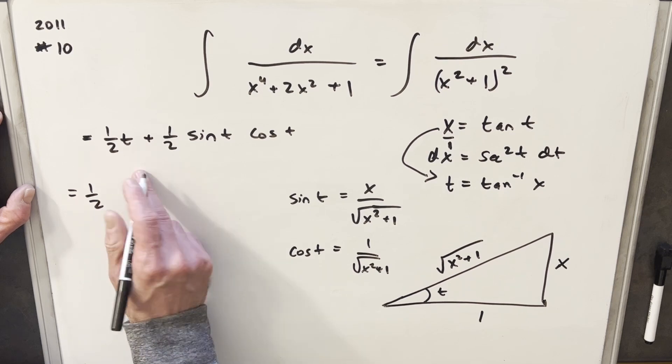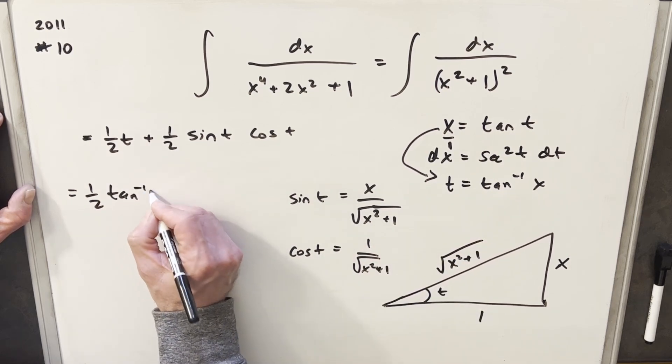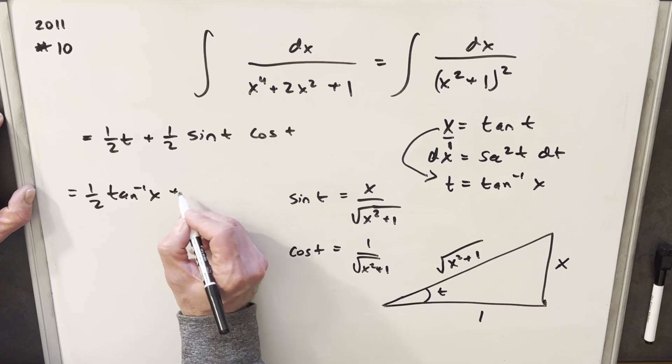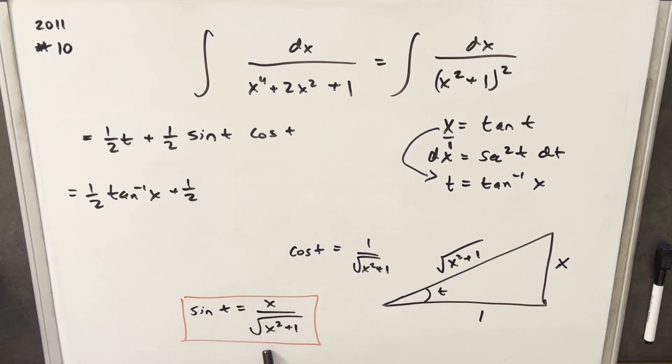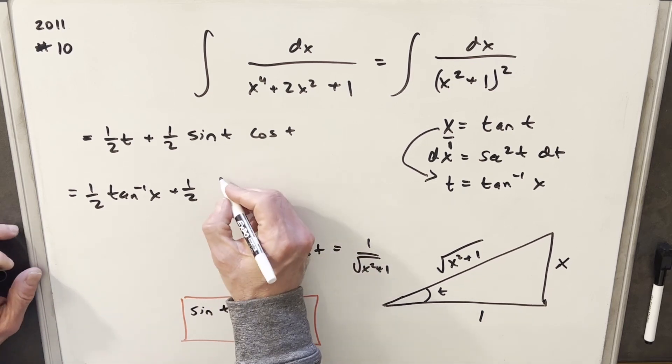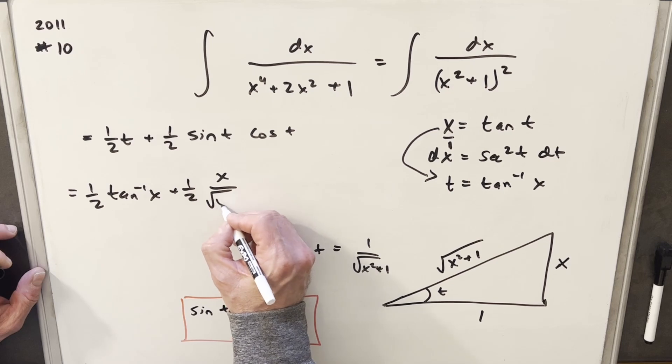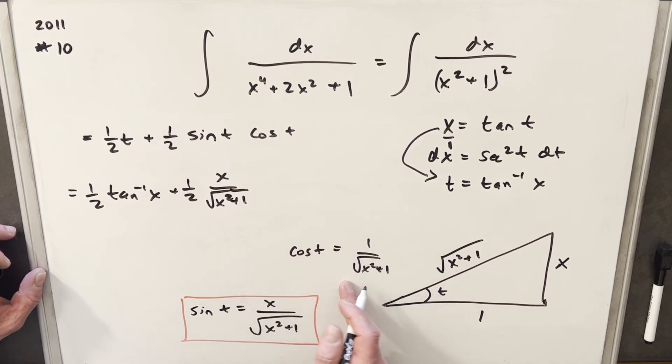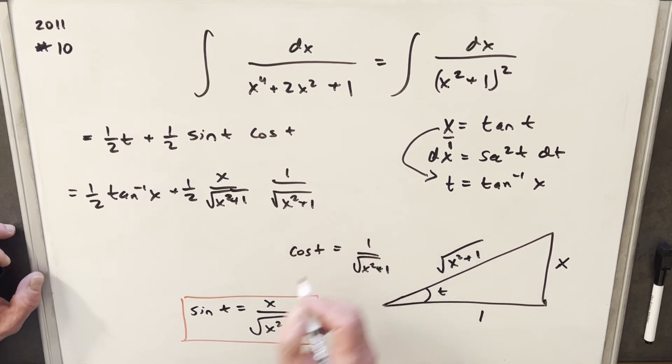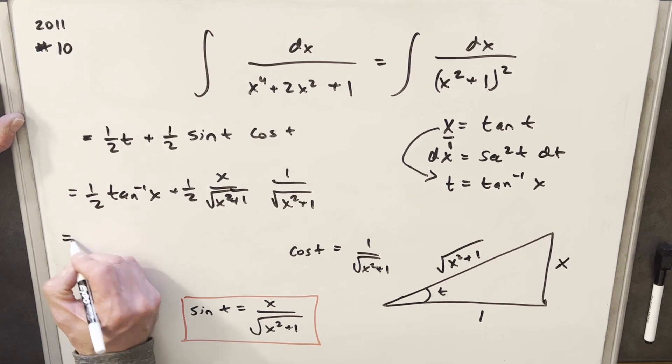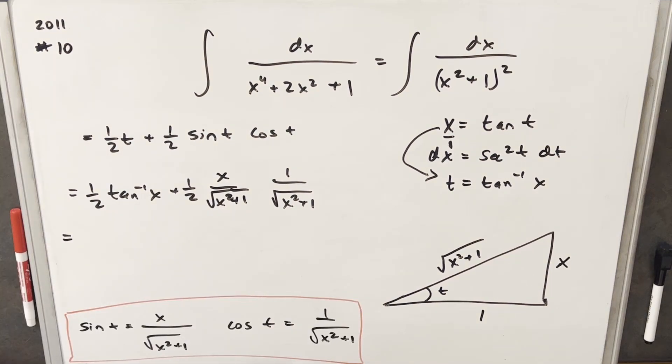So we're going to have 1 half. Our t value is this arctan of x. Then plus 1 half. Sine t is going to be this. And I didn't give myself enough room for it. Now for sine t, that's going to be this value that I moved because I didn't have enough space. Sine t was in the way, so I moved it down here. Anyway, for our sine t value, we're going to have just x over square root of x squared plus 1. And cos t is this thing over here. So 1 times another square root of x squared plus 1. And then to clean this up, we just need to... Okay, as you can see, I've done a poor job planning my space. So now our cos t and sine t is over here.